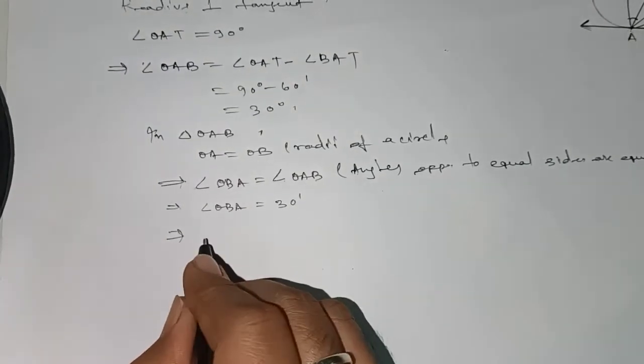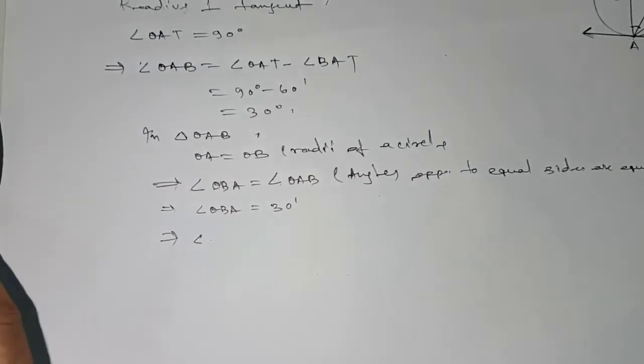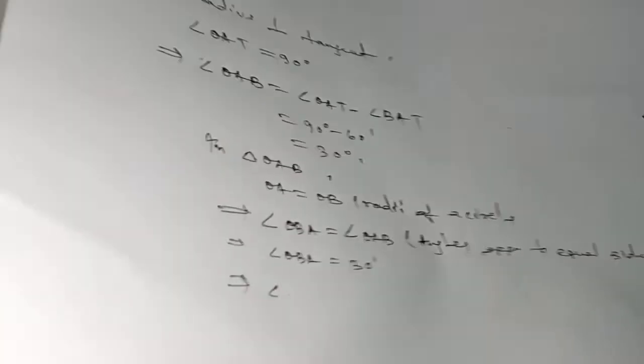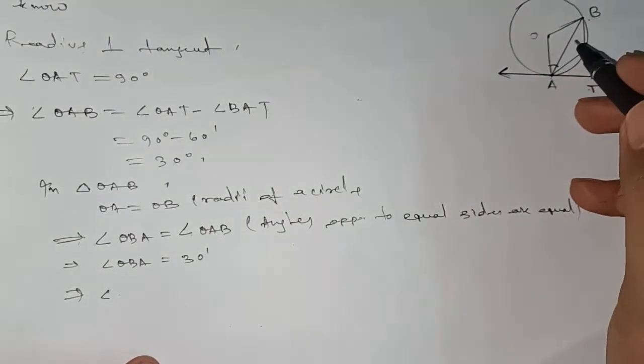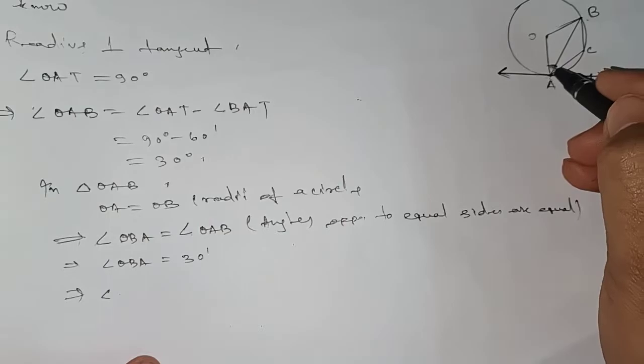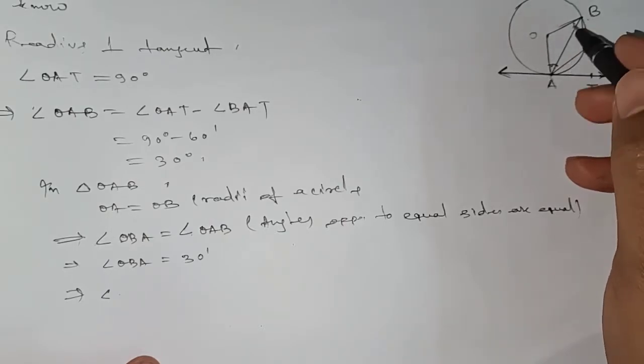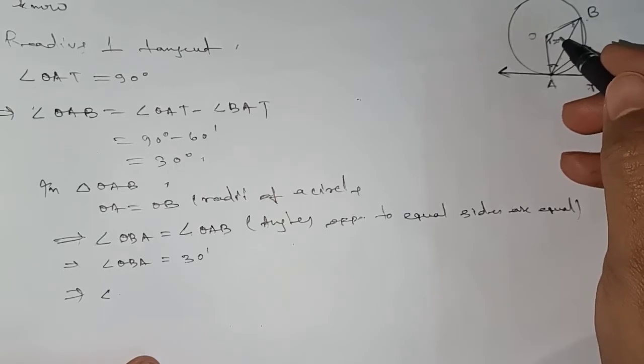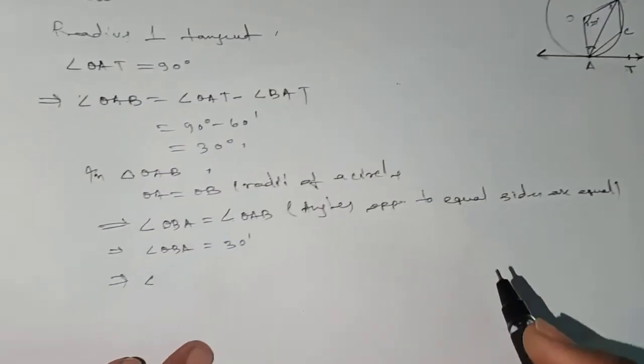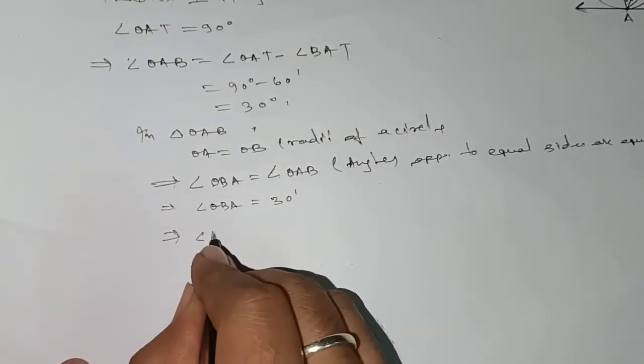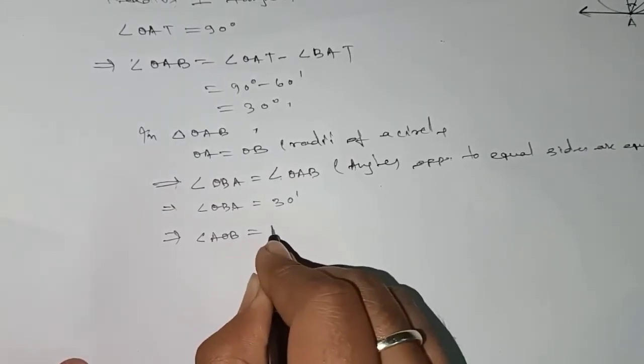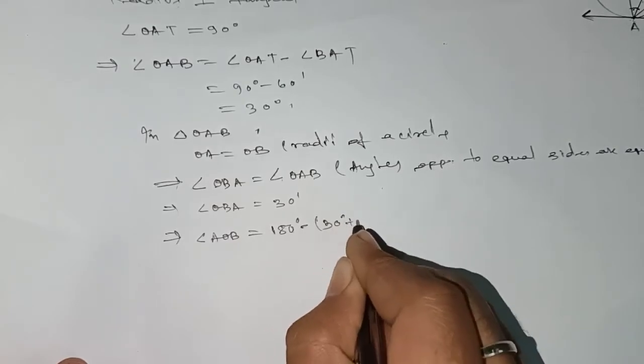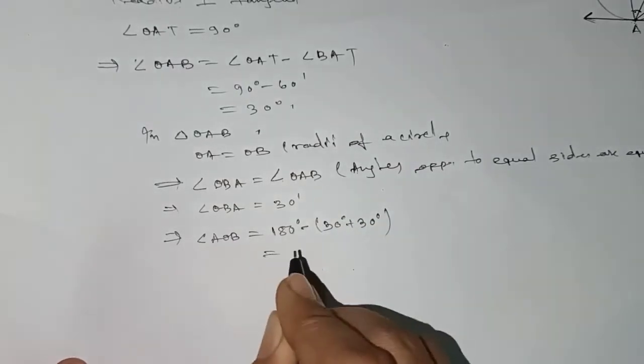Angle OBA equals 30 degrees. Adding 30 plus 30 equals 60. By angle sum property, angle AOB equals 180 minus 30 plus 30 degrees, which equals 120 degrees.